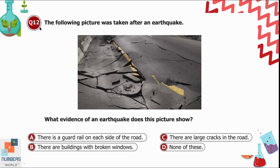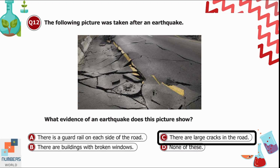Question 12: The following picture was taken after an earthquake. What evidence of the earthquake does this picture show? Option A is there is a guard rail on each side of the road. Option B is buildings with broken windows. Option C is there are large cracks in the road. Option D is none of these. We can clearly see large cracks in the road, so option C is correct.